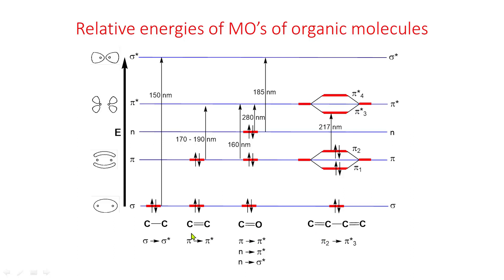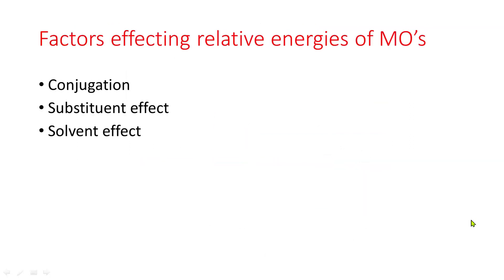If we compare the carbon-carbon double bond with a conjugated diene, we see that lambda-max for the conjugated diene occurs at a higher wavelength compared to ethylene. Factors that affect the relative energies of molecular orbitals are conjugation, substituent effect, and solvent effect.